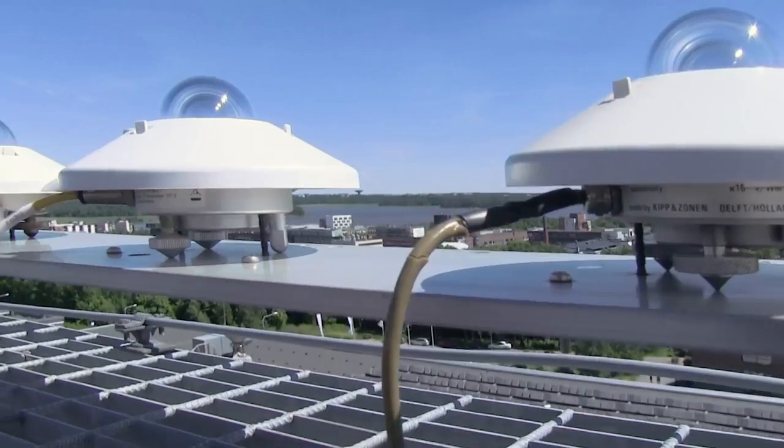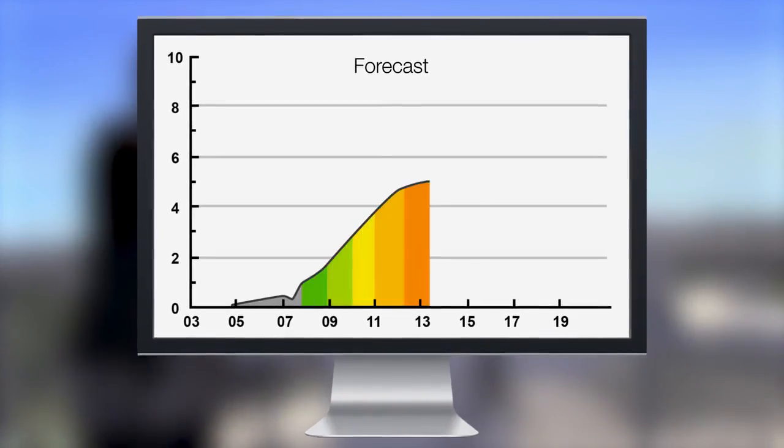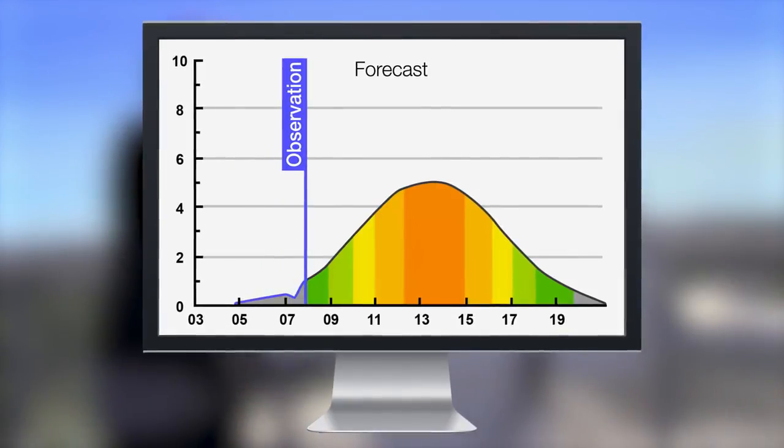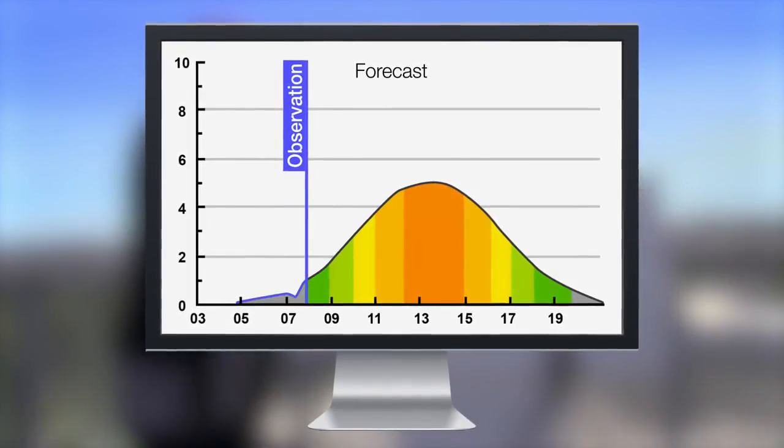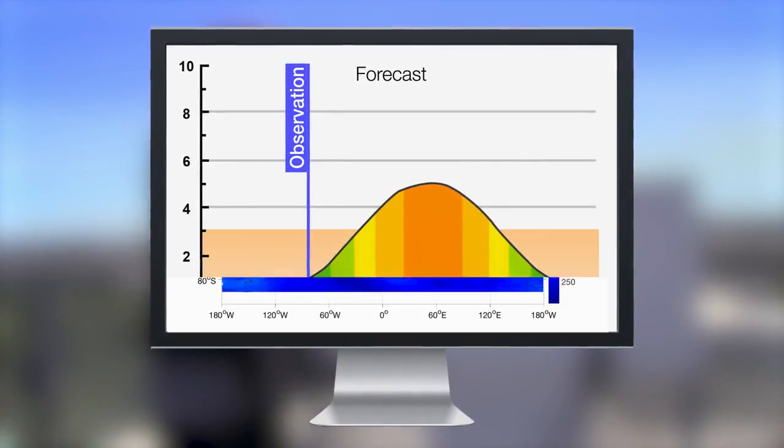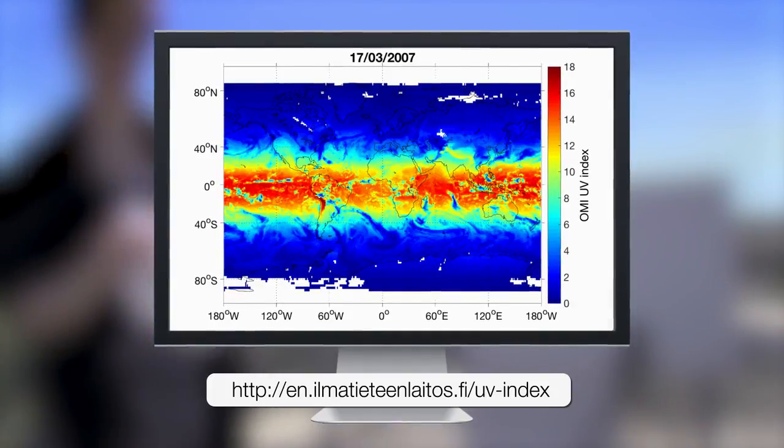The UV index represents the amount of solar UV radiation. Even though human beings need a small amount of UV radiation, protection is recommended when the UV index is 3 or higher. You can follow the situation on the website of the Finnish Meteorological Institute.